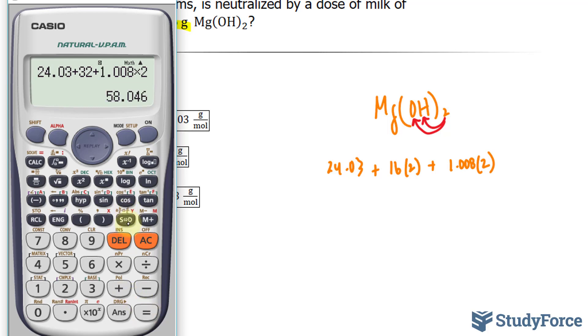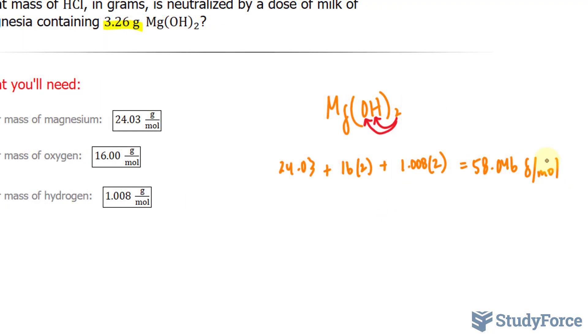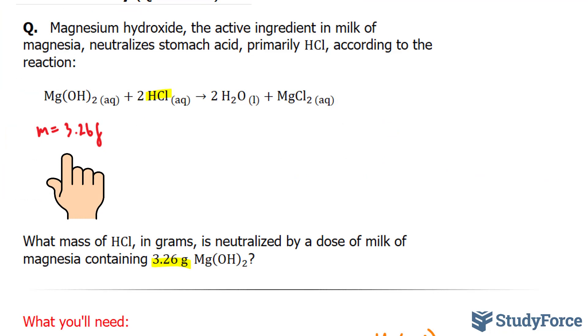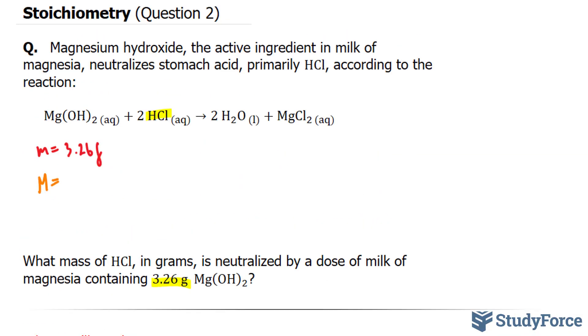This gives us 58.046. The reason I'm finding the molar mass is so I can multiply this number somehow with that number to get the number of moles. So once again, with a big M for molar mass, we have 58.046.